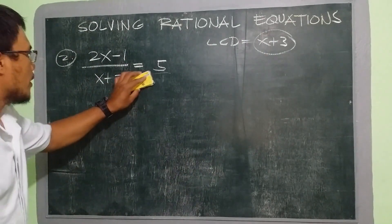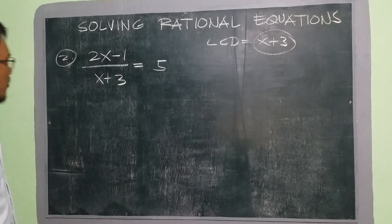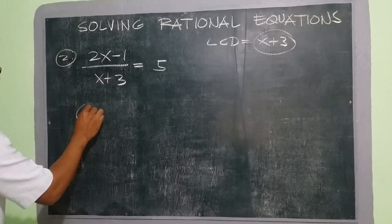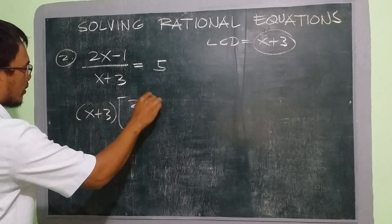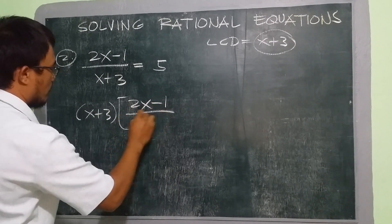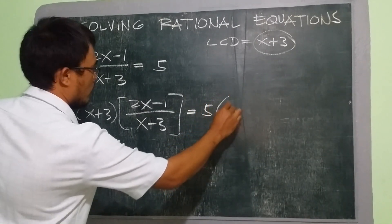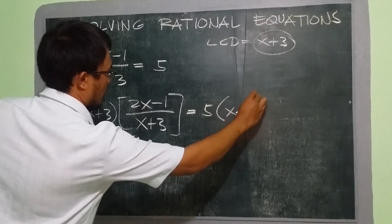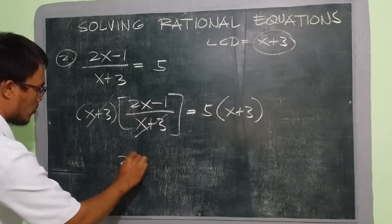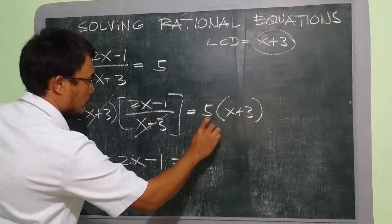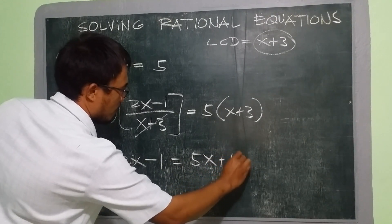So we're going to multiply both sides with our LCD which is x plus 3. This will become: we put x plus 3 multiplied to 2x minus 1 over x plus 3, and on the other side 5 multiplied by x plus 3. Now we cancel out x plus 3. What remains is our 2x minus 1, and 5 times x is 5x, and 5 times 3 is 15.